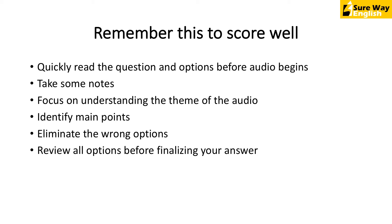When picking the options, first eliminate the wrong ones — anything obviously wrong, based on information not in the audio, or something logically absurd. Eliminate those options and then pick your final answer. Even after arriving at an option you think is correct, make sure you've reviewed all other options as well. Sometimes after seeing the other options you'll find something that is a better or actually correct answer. Don't finalize your answer until you've looked at all the options.